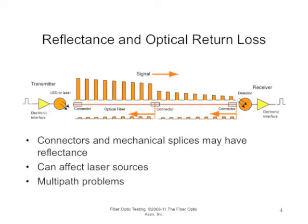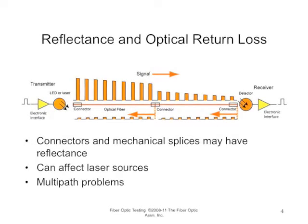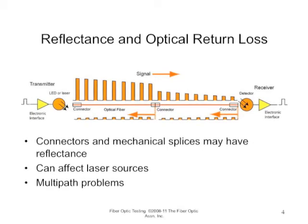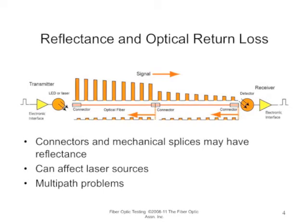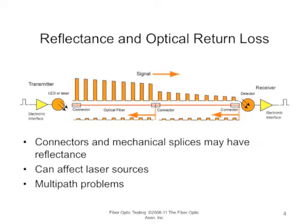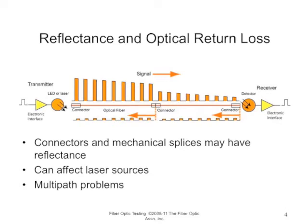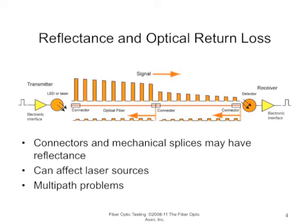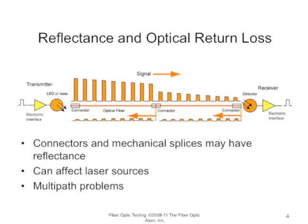Reflectance occurs at a junction between two fibers, usually a connector, although it can be a badly made fusion splice or mechanical splice, where a small amount of the light is reflected back toward the source. Reflectance can affect laser sources and cause multi-path interference problems, basically building up noise in the link. So it's important to know if you have overly reflective joints, especially in high bit rate laser systems.